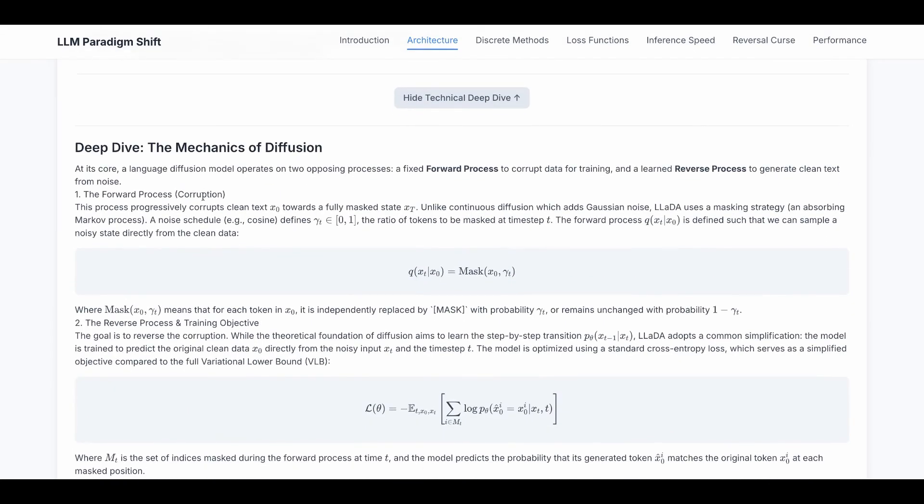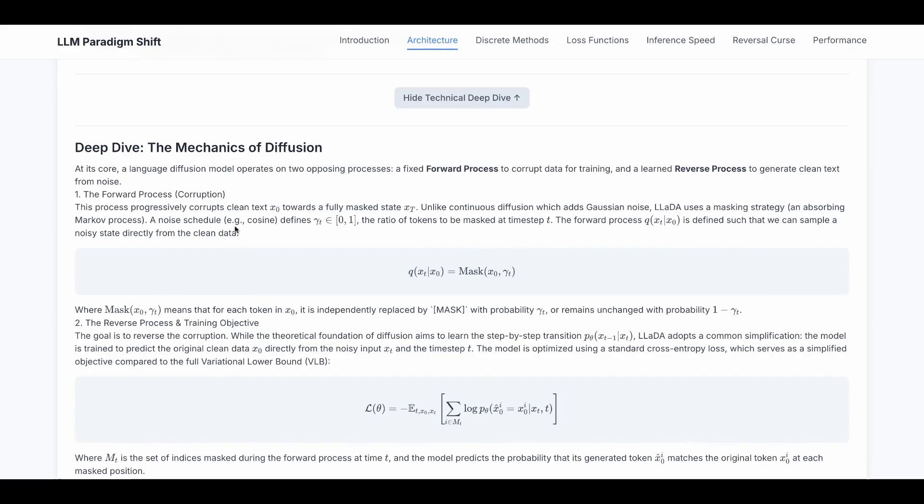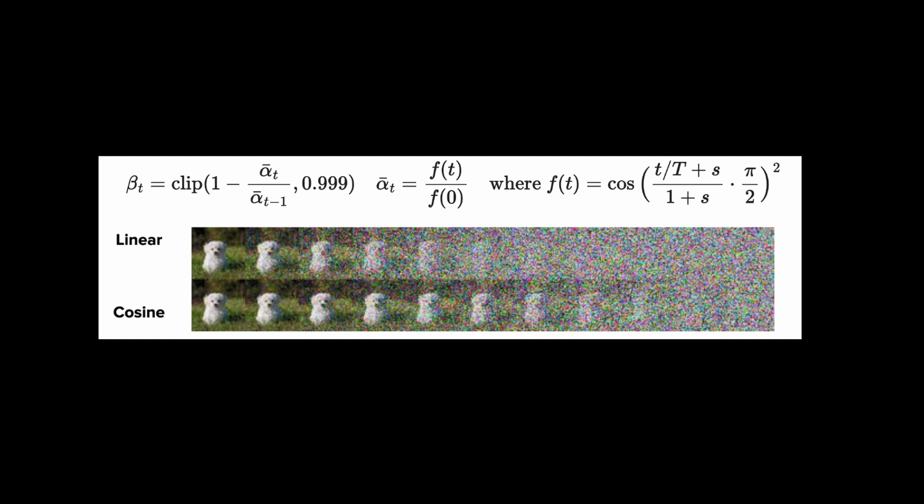So this is the same as the image diffusion. However, there are some differences you're going to see soon. In the forward process, which is the corruption process, this process progressively corrupts clean text x0 towards a fully masked state xt. Unlike continuous diffusion which adds Gaussian noise in the image diffusion case, diffusion LM uses a masking strategy, an absorbing Markov process.